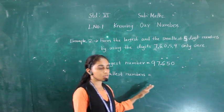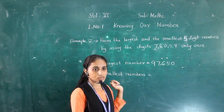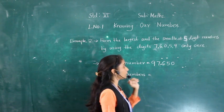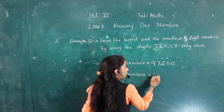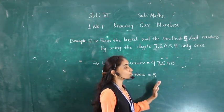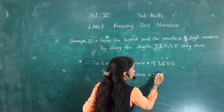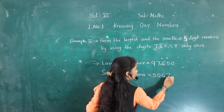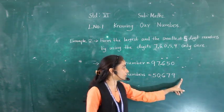While making the smallest number, we first write the smallest non-zero digit, which is 5. After that, we arrange the remaining digits in ascending order: 0, 6, 7, 9. So the smallest number is 50679.